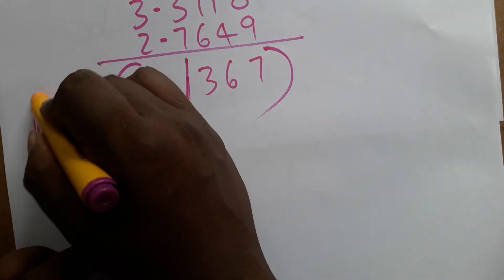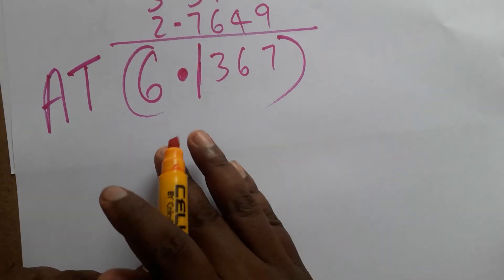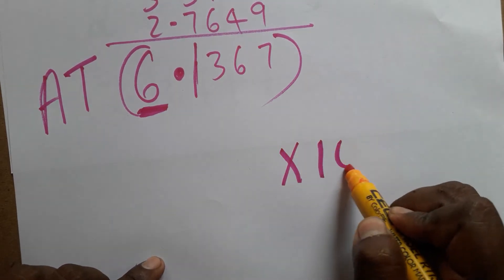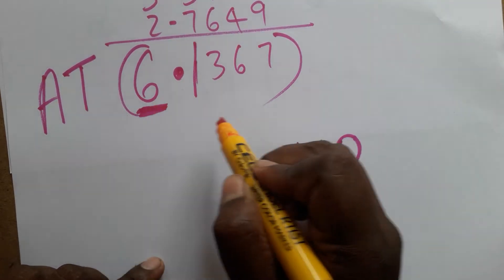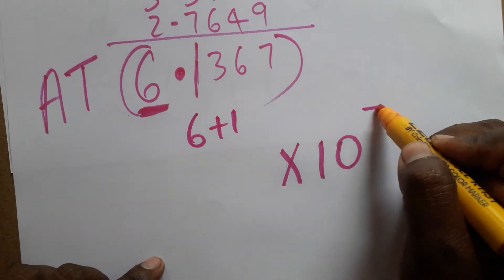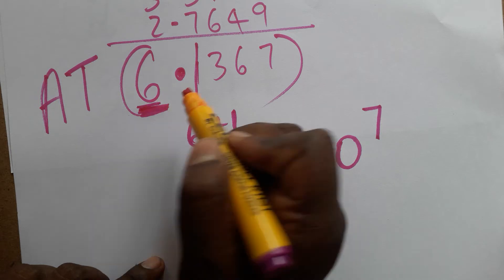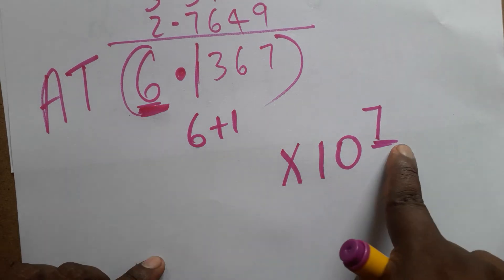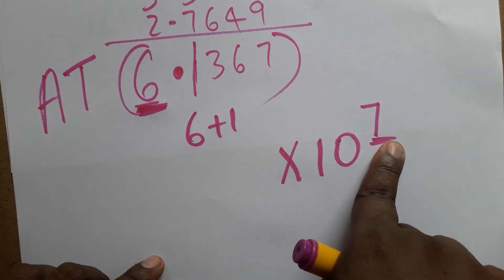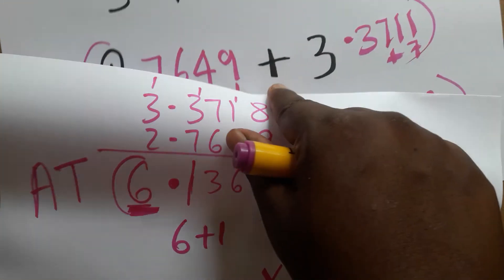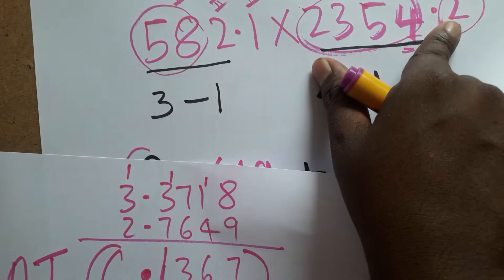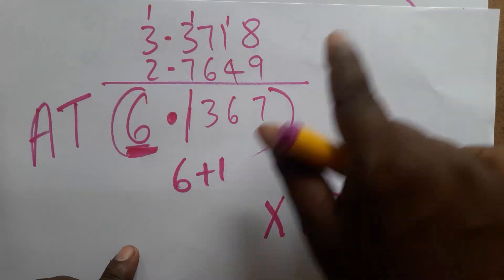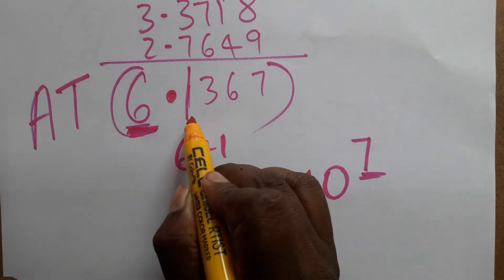Now we check this in the antilog table. Before going to the antilog, the characteristic here is 6. When taking the antilog, you add one to the characteristic: 6 plus 1 gives 7, so the power of 10 is 7. For example, if the characteristic were 5 the power would be 6, and if it were 4 the power would be 5. When finding the log you subtract one number; when taking the antilog you add one number.